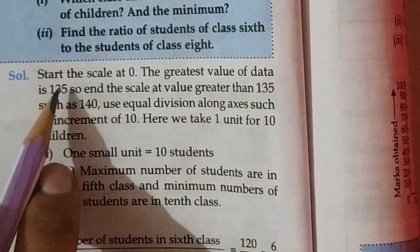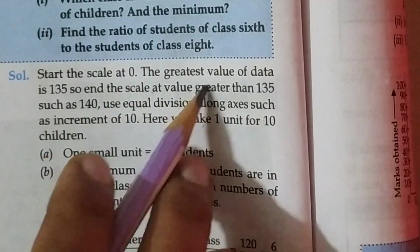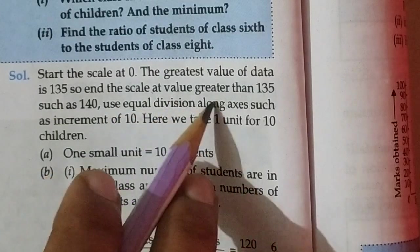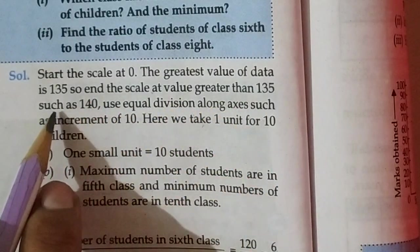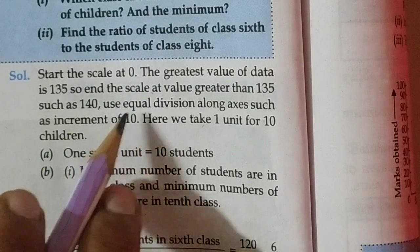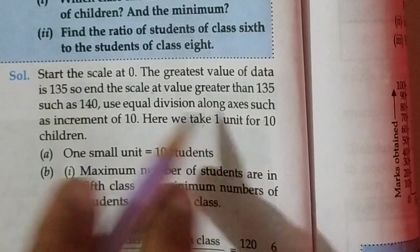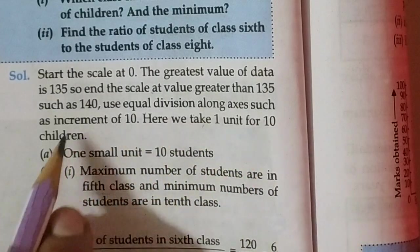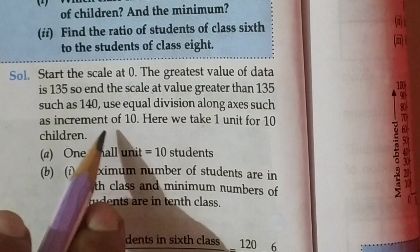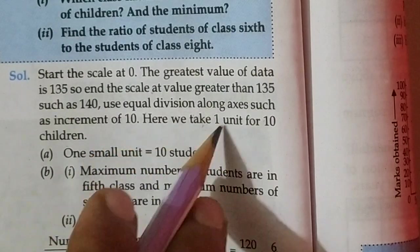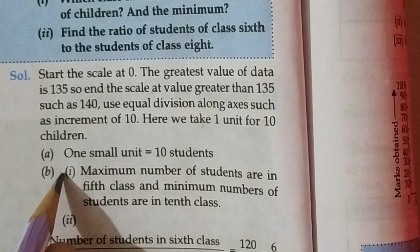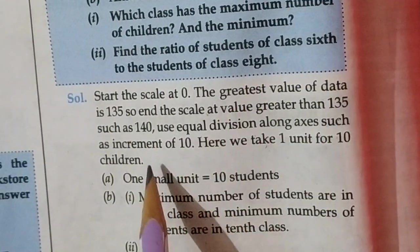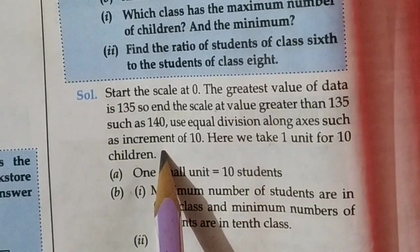Now students, first start the scale at 0. The greatest value of data is 135, right? End the scale at a value greater than 135, such as 140. Use equal divisions along the axis, such as increments of 10. Here we take 1 unit for 10 children.